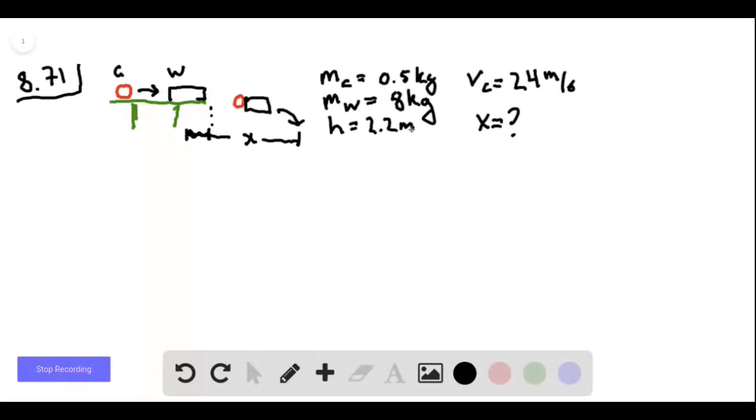Height of the table is 2.2 meters. These are the masses of the objects. The clay is originally moving at 24 meters per second, so we need to find x.